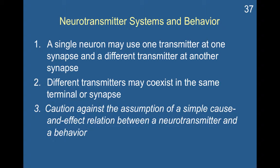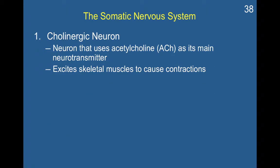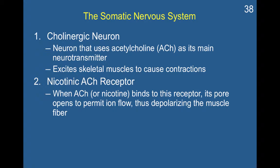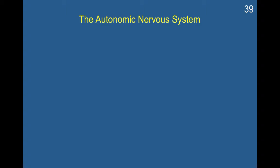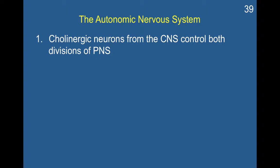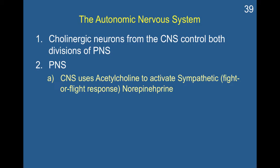A neurotransmitter can be both excitatory and inhibitory and can have different activation or structural effects on a cell. Here's an example within the somatic nervous system. The cholinergic neuron uses acetylcholine as its main neurotransmitter, which excites skeletal muscles to cause contractions. When ACh or nicotine binds to the nicotinic ACh receptor, its pore opens to permit ion flow, depolarizing the muscle fibers. In the autonomic nervous system, cholinergic neurons from the central nervous system control both divisions of the peripheral nervous system.